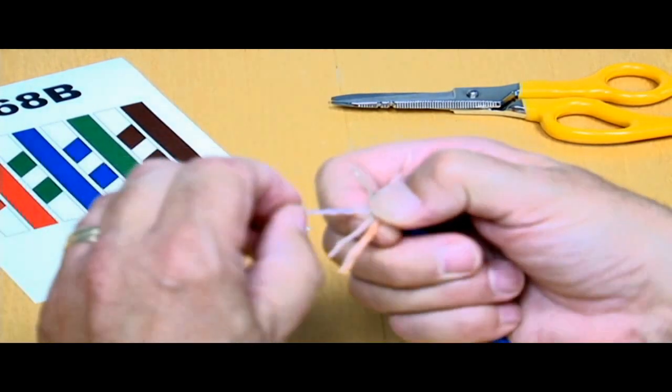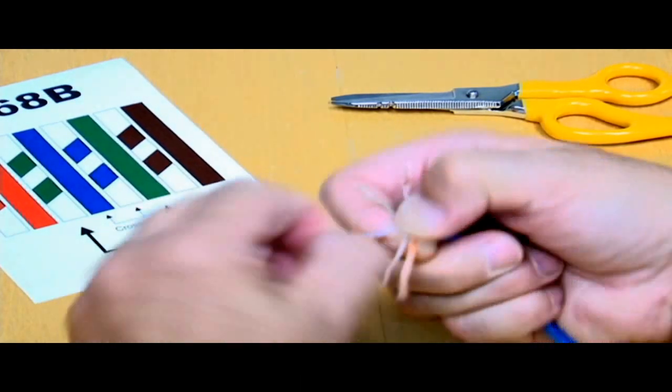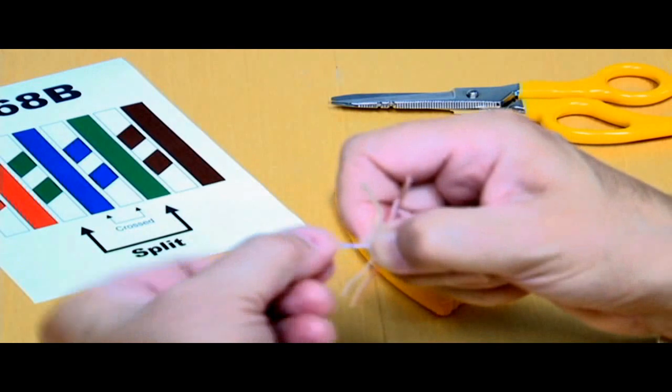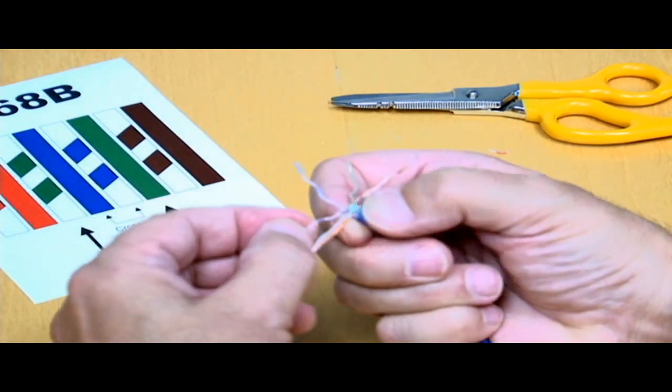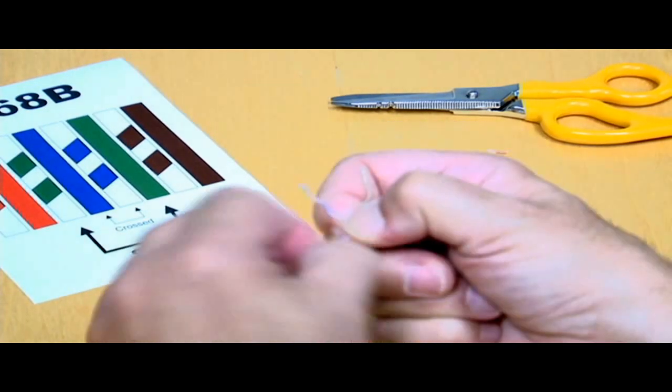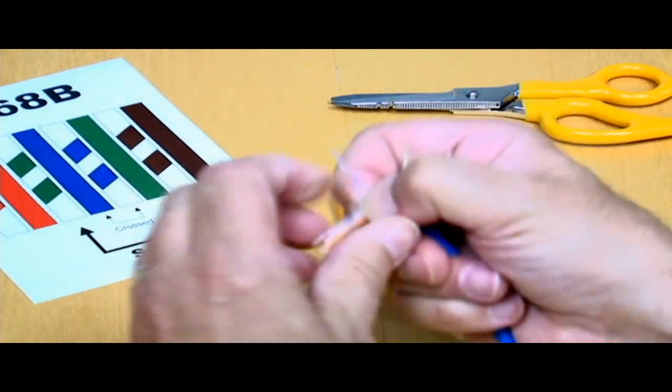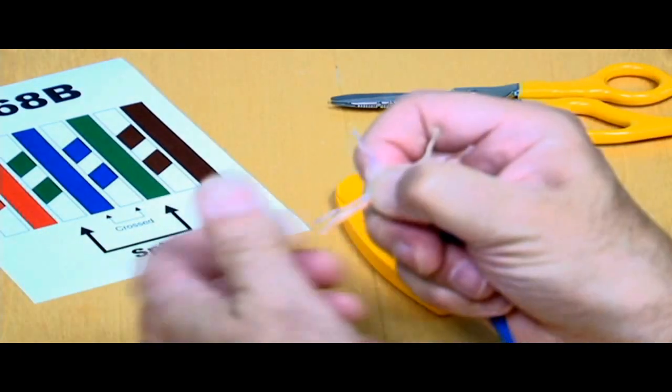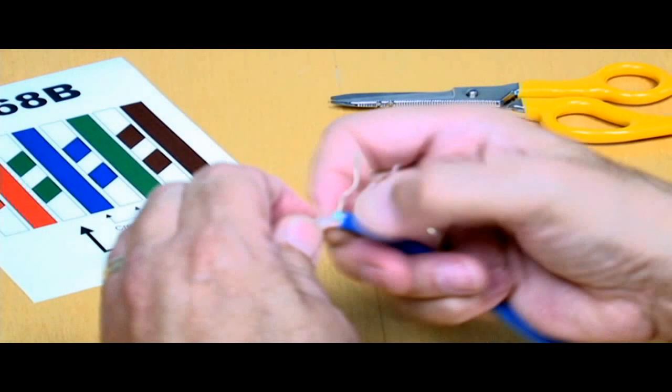Now we're going to bring down the blue pair. So we're going to unlock or untwist the blue pair. The next conductor that goes down is the solid blue. So we will lay the solid blue conductor down, and it'll go right beside the white conductor with the green stripe.